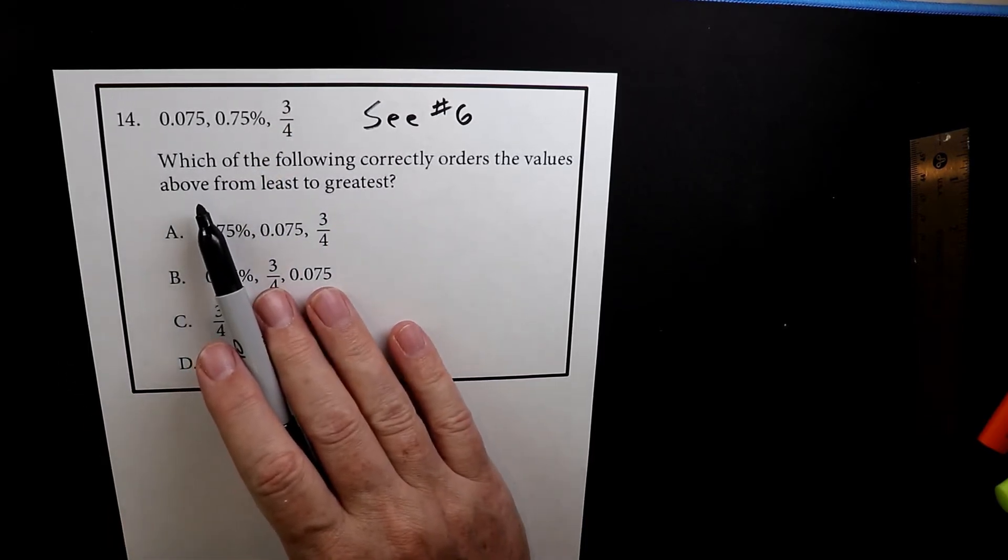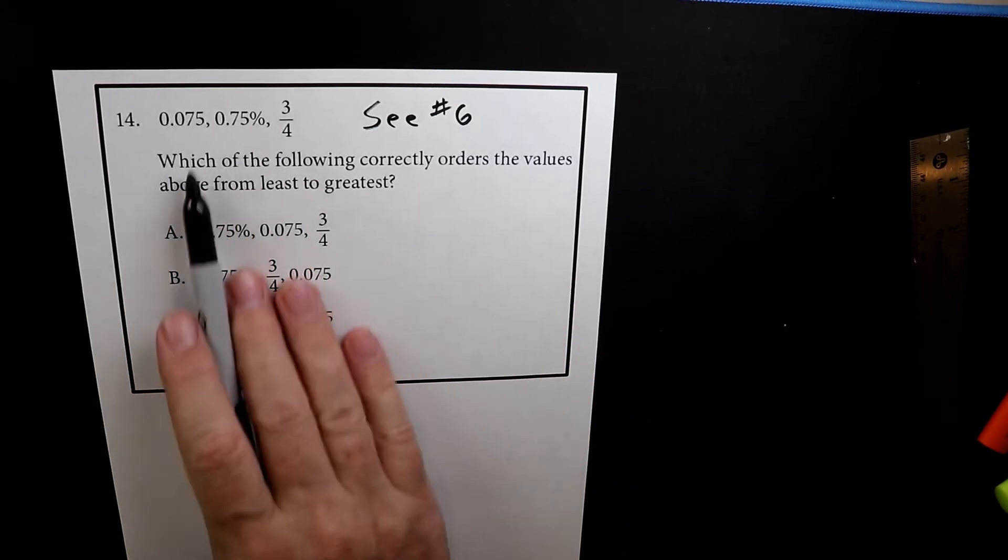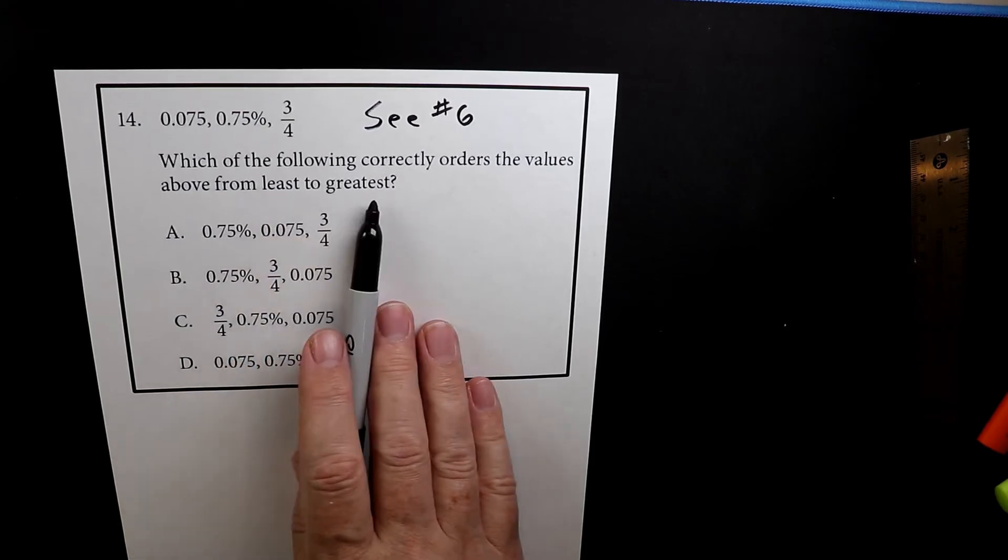And what they're asking us to do is which of the following correctly orders the values above these from least to greatest, from smallest to biggest.